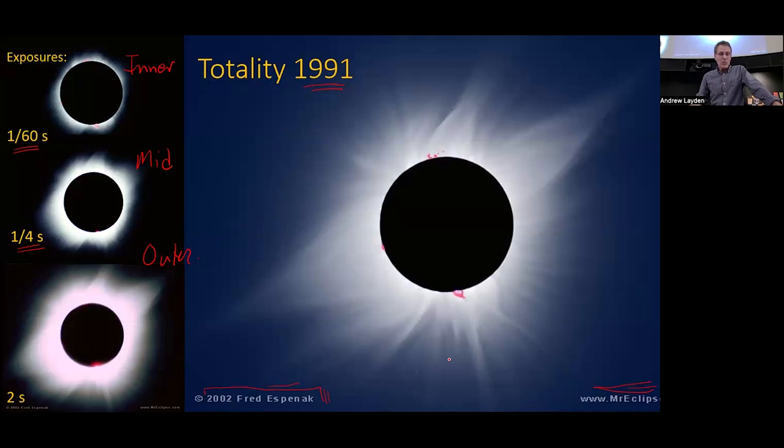Back in the eclipse of 1991, he took this series of photographs with different exposure times. He opened the shutter for 1/60th of a second to capture the bright inner corona, then a quarter second for the middle corona, then 2 seconds for the faint outer corona. The sequence of photographs allows you to see piece by piece how the corona looks. You can see there's a prominence here and here. There are these streamers extending away in the corona, some brighter, some fainter.